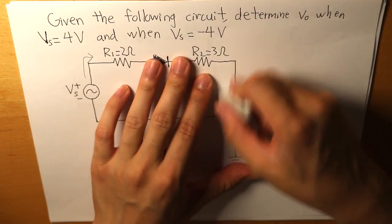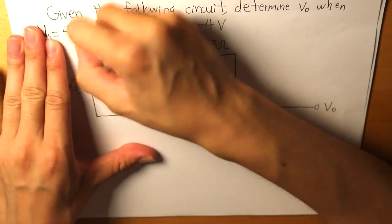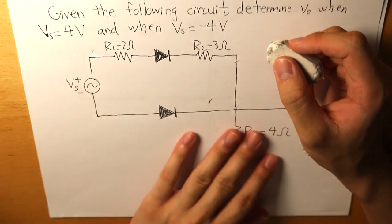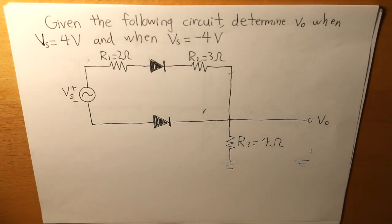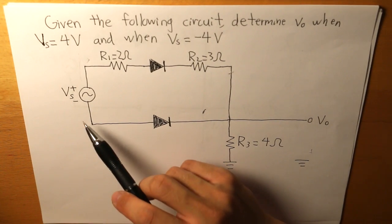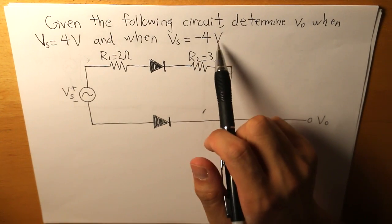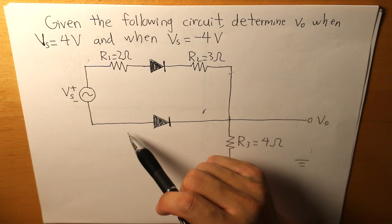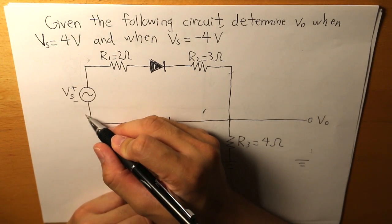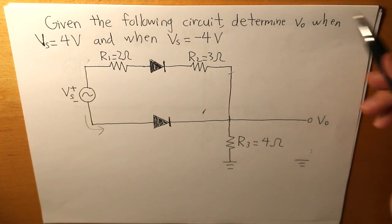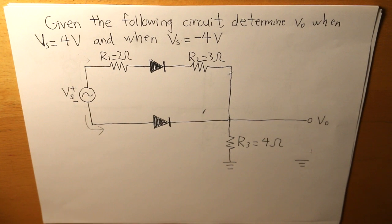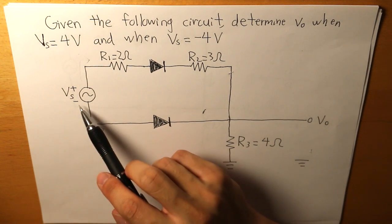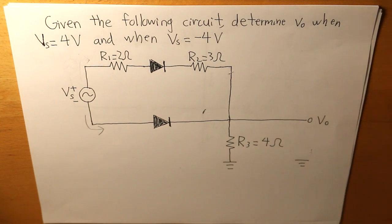Now I'm going to erase this, and then we're going to find out what happens if the voltage source is negative 4 volts. So if the voltage source is negative 4, the current is going to travel this direction. But what we do know is that it is negative, and current travels from a higher potential to a lower potential.